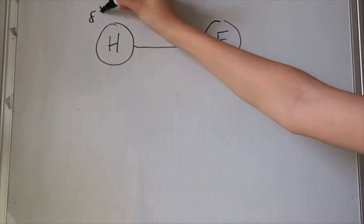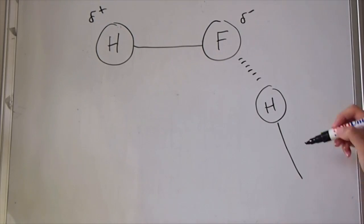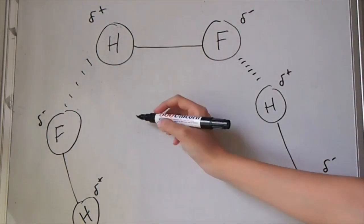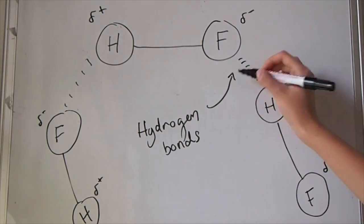This is because fluorine has a high electronegativity, so hydrogen fluoride molecules have a high polarity. If the polarity is very high, then its hydrogen bonds are strong.